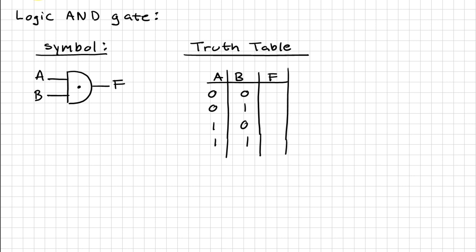We have four possible combinations. The way an AND gate works is that the output, in this case F, is equal to zero if one of its inputs is equal to zero.